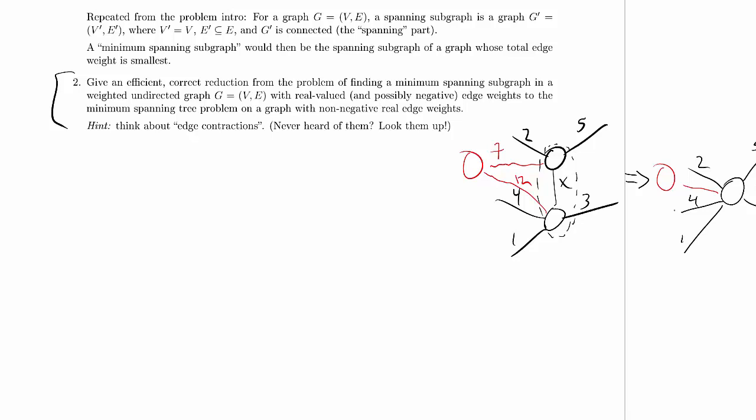Let's see how that would help us here. We want to reduce the problem of finding a minimum spanning subgraph when there are negative edge weights to the problem of finding a minimum spanning tree when there are no negative edge weights. And we already saw that finding the minimum spanning subgraph in a graph with non-negative edge weights, we can solve that by finding the minimum spanning tree. That's what we proved in part one.